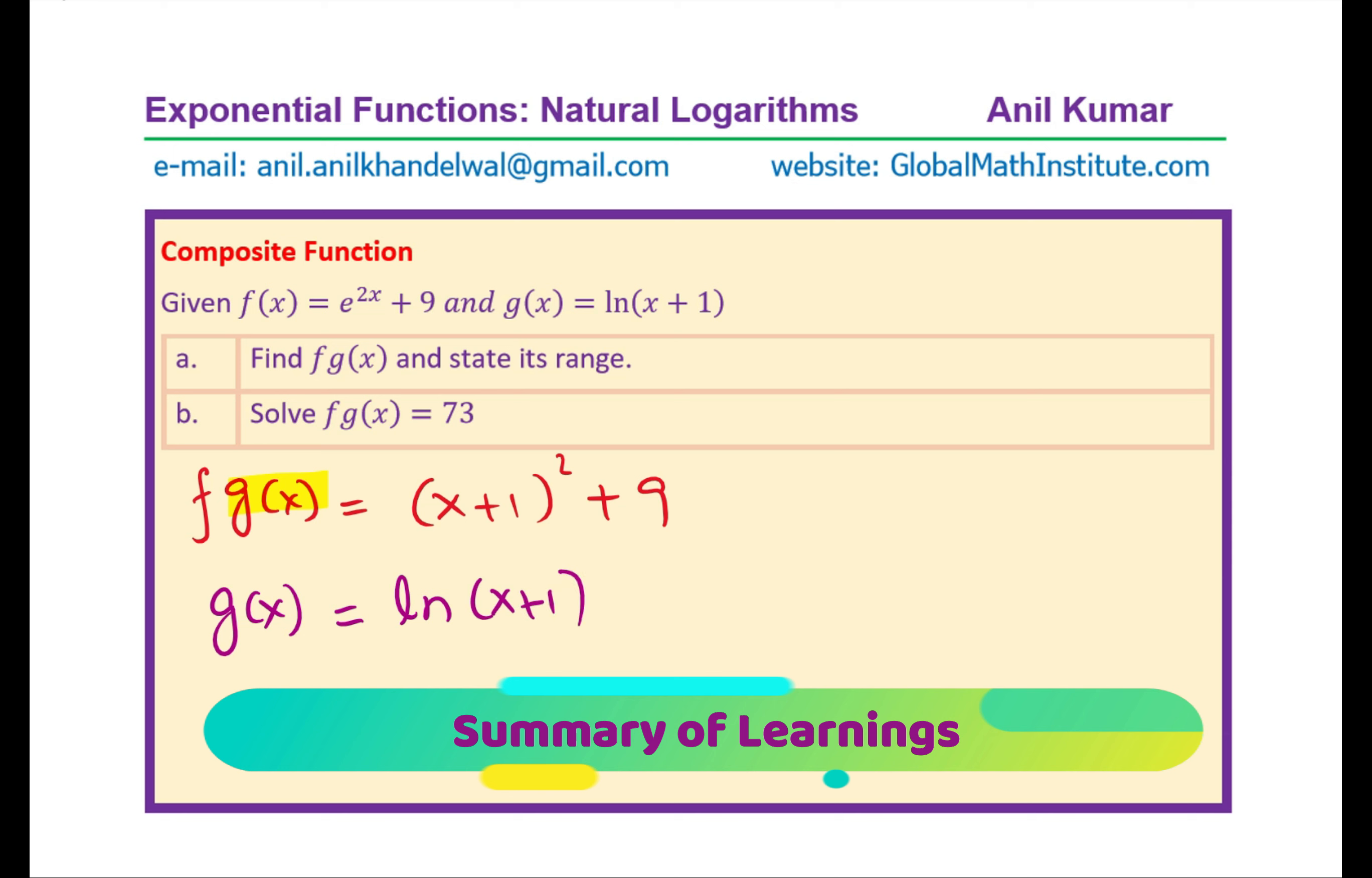So we have just shown that f of g of x is equal to (x + 1) whole square plus 9. Now the inside function is g of x. Let us analyze g of x. g of x is equal to ln(x + 1). So that means the domain is what? Domain is that x has to be greater than minus 1, right? Since natural log is only defined for positive values greater than 0, right? So that gives you x greater than minus 1.